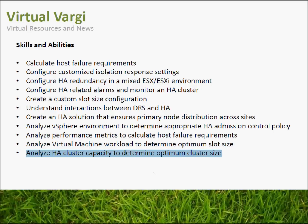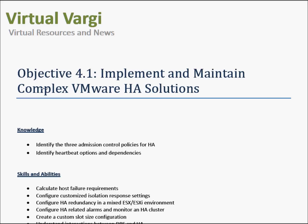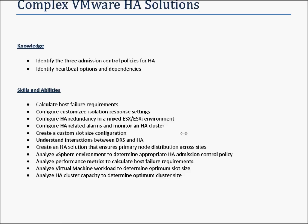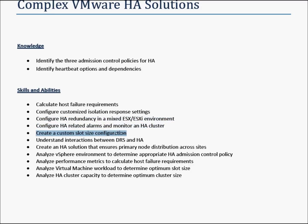For the last few areas, we're actually just going to reference some material that you can read. I'm going to have this document available for download, as in my previous videos. We're going to configure isolation response settings, configure HA redundancy, and have a look at alarms and slot sizes. The rest will have links and documents that we'll need to read to cover these areas.